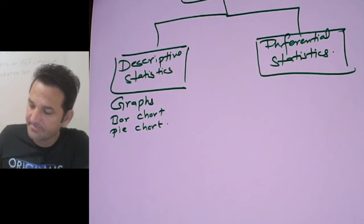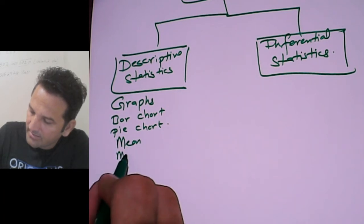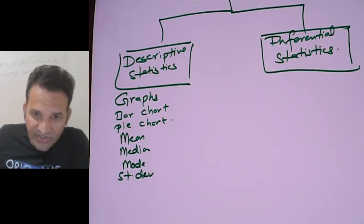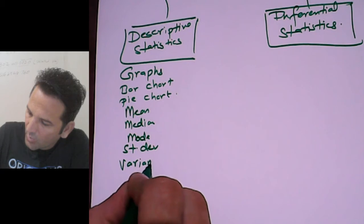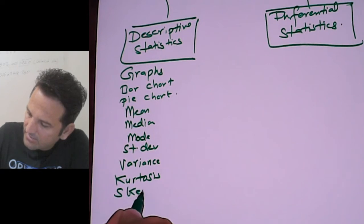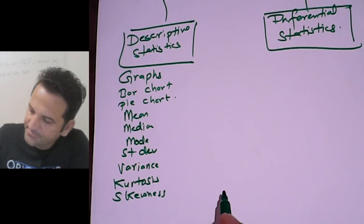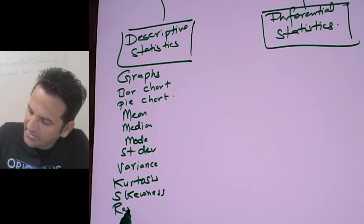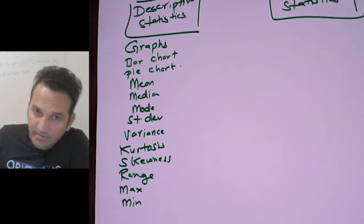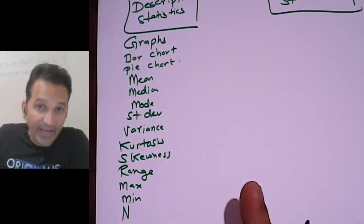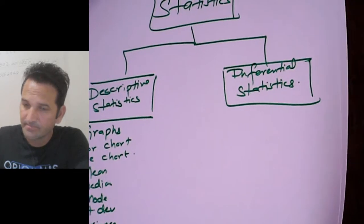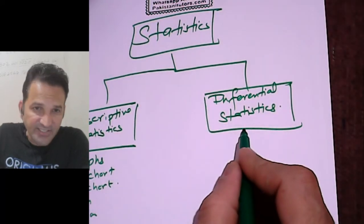Apart from graphs, in descriptive statistics we also study mean, median, mode, standard deviation, variance, range, maximum, minimum, and the total number of observations n. Now, what does inferential statistics deal with?